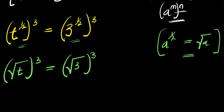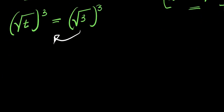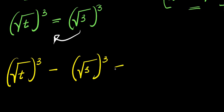At this point I can move this over here, so what we are going to have is: square root of t raised to the power of 3, minus square root of 3 raised to the power of 3, and this equals 0.